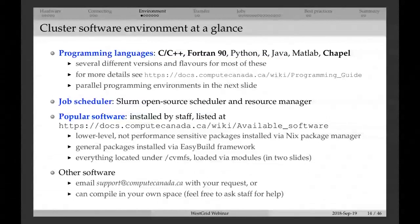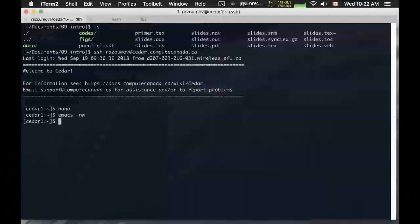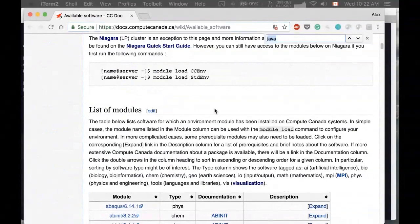If you don't like Emacs, there are other text editors that support remote file editing. Atom is an open-source multi-platform option for Windows, Linux, and Mac. Sublime Text is a commercial option but fairly expensive. Whatever you prefer. Now let's jump to the cluster software environment. We have a number of programming languages: compiled languages C, C++, Fortran, Chapel — a new language for parallel programming. For each, we have several different flavors and vendors. We also have Python, R, Java, MATLAB, and Perl. All of these are documented in the programming guide linked from the slides.